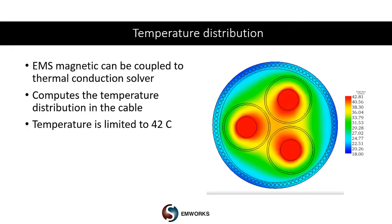Finally, let us take a look at the temperature distribution. EMS can be coupled with a thermal conduction solver. Together, the magnetic and thermal conduction solvers compute the temperature distribution in the cable as you see here. For this particular cable, the maximum temperature is limited to 42 degrees centigrade, which is within the design specifications for the cable.